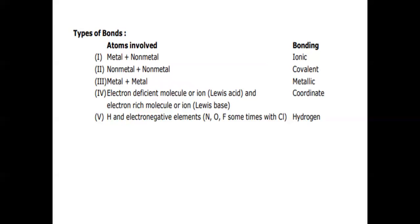Based on the particles involved in chemical combination, we can predict the type of bonding. If one metal and one non-metal are involved in bonding, the type is ionic bonding. If both are non-metals, then it is covalent bonding. If both are metals, then it is metallic bonding. If one particle is an electron-deficient molecule acting as Lewis acid and another is an electron-rich molecule acting as Lewis base, the bond is coordinate bond, also known as dative bond.